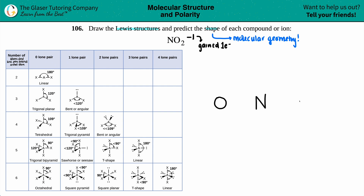Nitrogen has five valence electrons — if we look for nitrogen on the periodic table, it's in group 5A or 15, so it's got five valence electrons: one, two, three, four, five. Now comes oxygen. Oxygen has six valence electrons: one, two, three, four, five, six. And the second oxygen also has six: one, two, three, four, five, six.